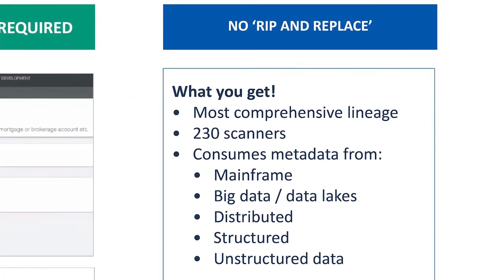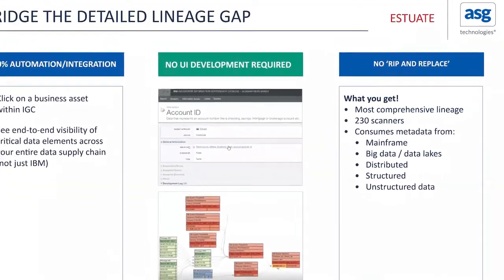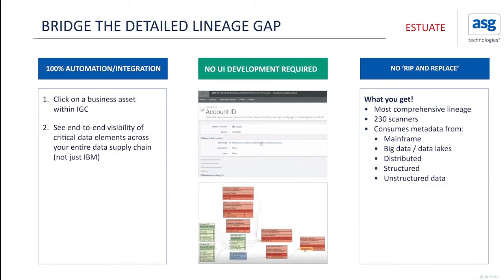ASG's lineage appliance uses over 230 ASG scanners to automatically ingest all forms of metadata, such as applications, programming languages, ETL processes, modelers, schedulers, and business intelligence tools. The product collects metadata from mainframe, ERPs, big data, data lakes, distributed structured and unstructured data sources, and in many cases the metadata can be used to create a complete view of data lineage.